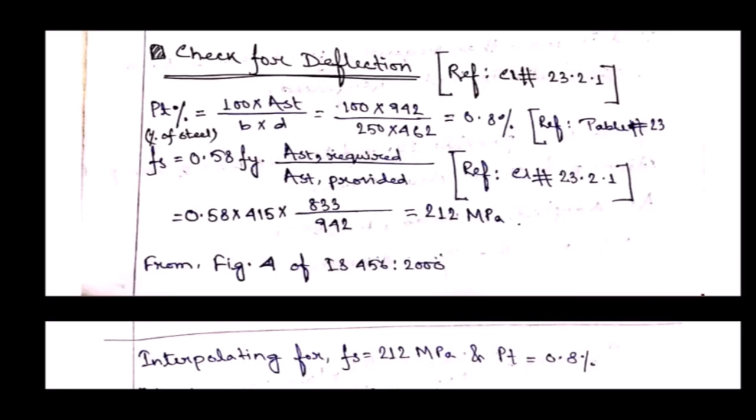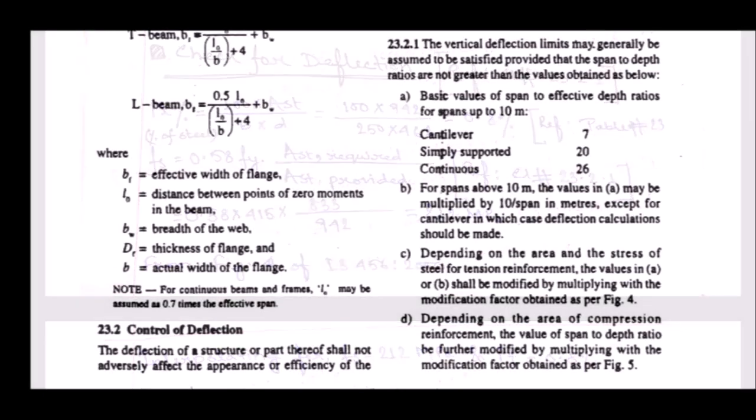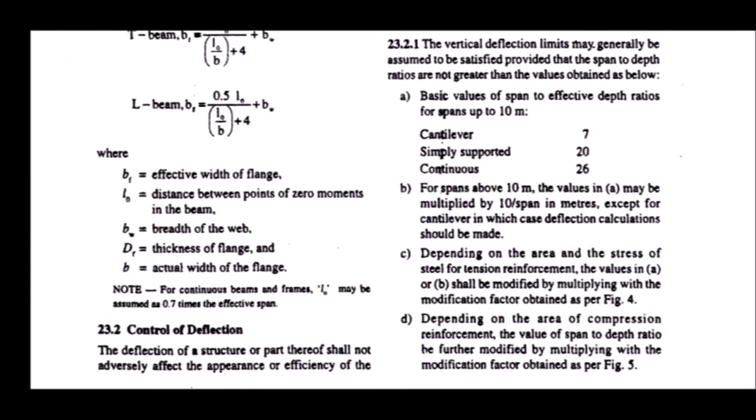For that, we have to go to clause number 23.2.1 and check figure 4 also. Let's go to IS code and check clause number 23.2.1. In clause 23.2.1a, the basic values of span to effective depth ratio — that means length to effective depth ratio — there are three values given depending upon support condition: cantilever, simply supported, and continuous.